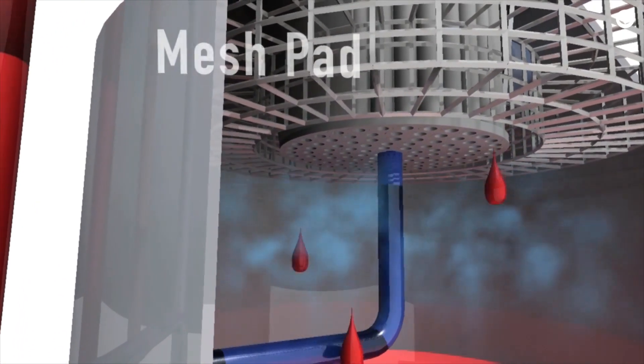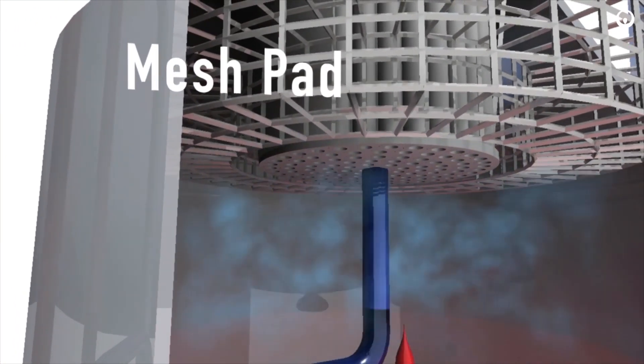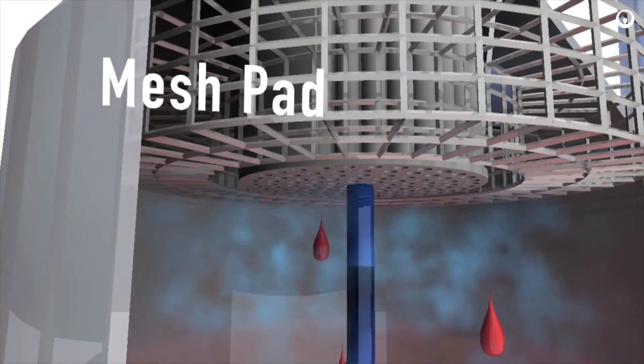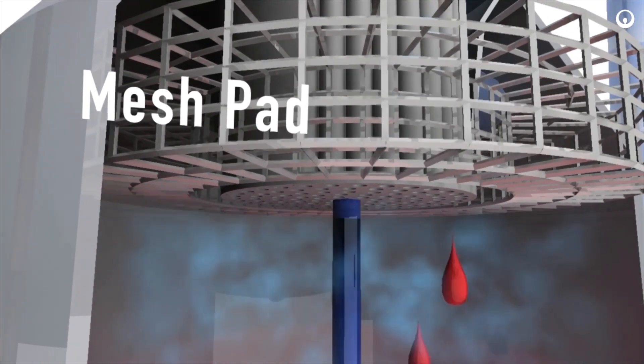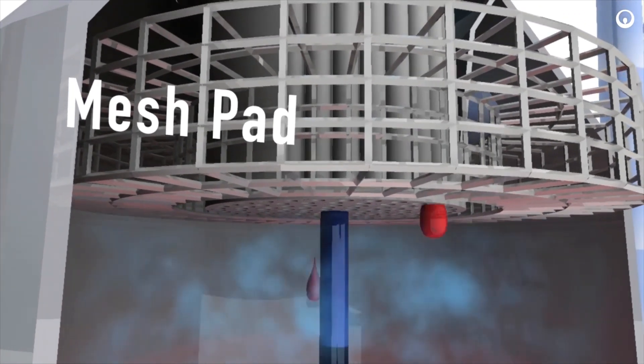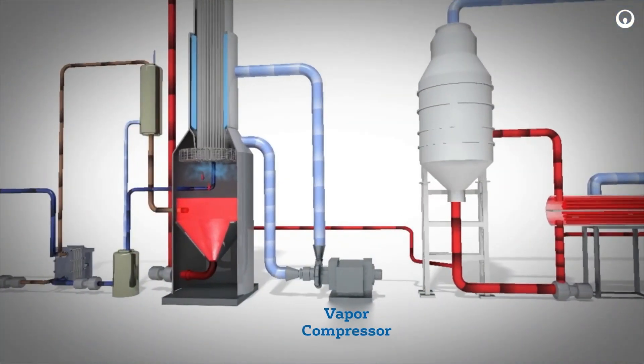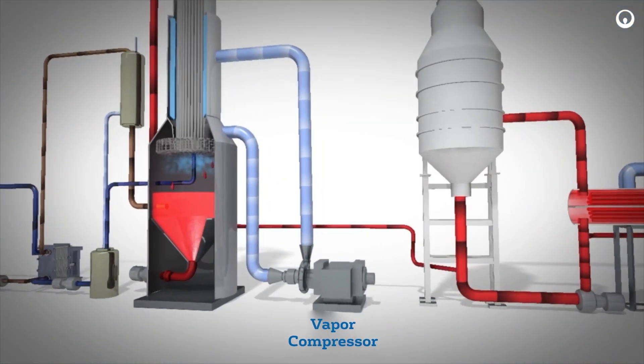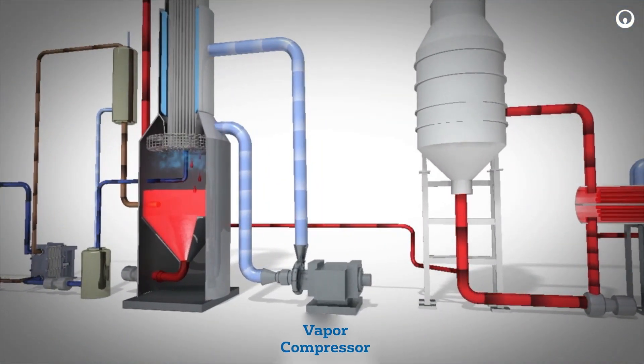Evaporated water vapor flows through the mesh pad mist eliminators. The mesh pad mist eliminators remove any brine droplets from the vapor. That vapor exiting the mist eliminators flows to the vapor compressor. The compressor increases the vapor pressure slightly.